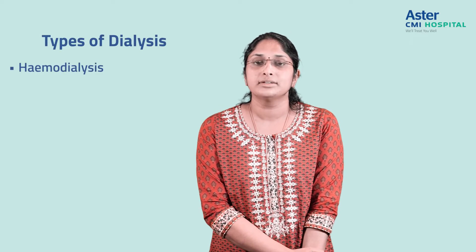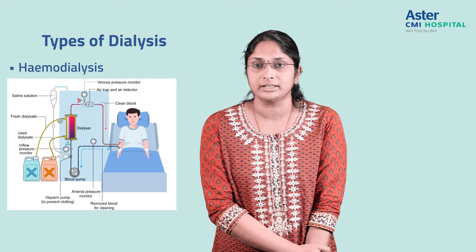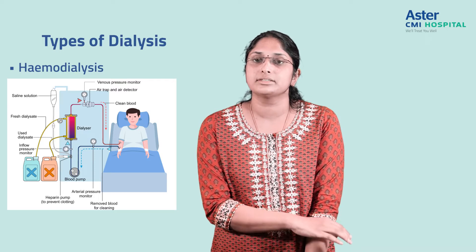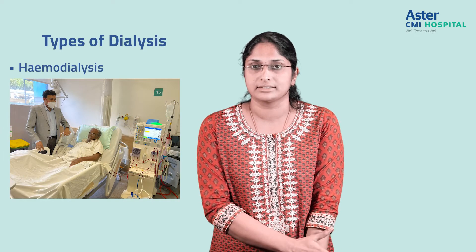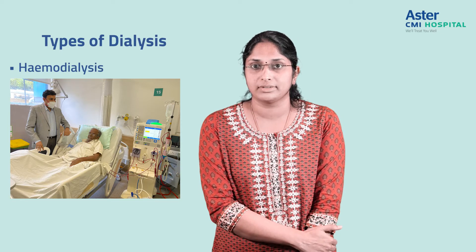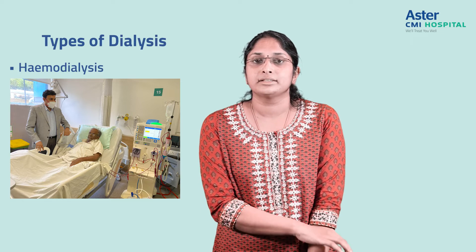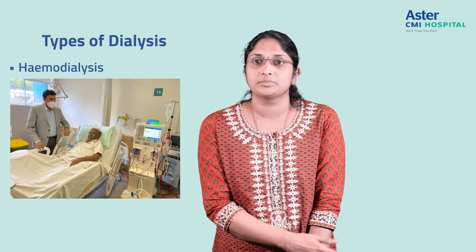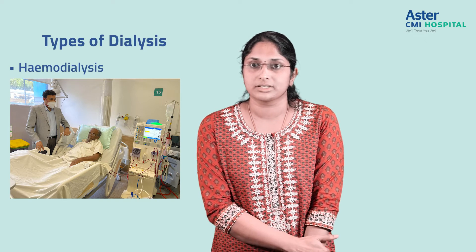There are two ways of starting dialysis in these patients. One is hemodialysis, where we access the bloodstream either through a catheter in the neck or through other forms of access like fistulas. Through this access, blood is removed from the circulation into a machine that contains an artificial kidney called a hemodialyzer. There is exchange of solutes, waste, and water across the semipermeable membrane — the hemodialyzer — and the blood is purified and returned to the patient. This is done regularly, usually twice or thrice weekly based on the patient's profile.